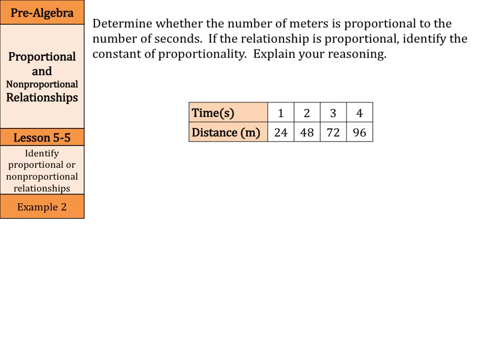What about this time and distance question? Again, if we have our time as x and our distance as y and we write these as ratios, we have 24 over 1, 48 over 2, 72 over 3, and 96 over 4.